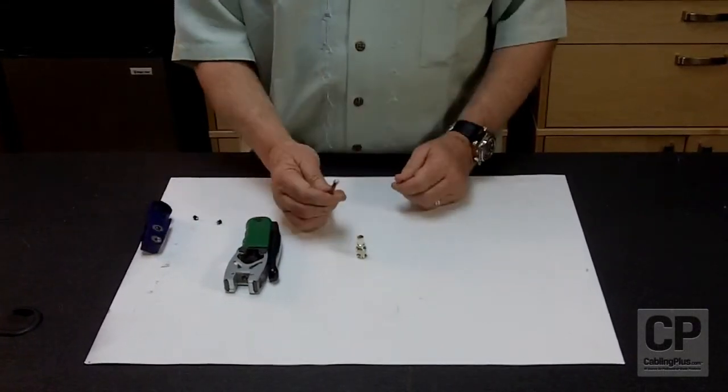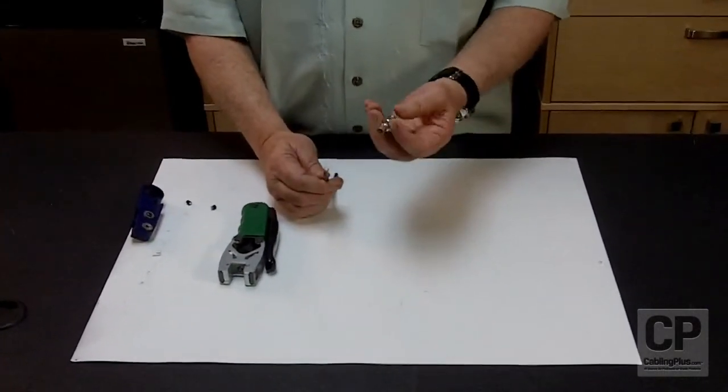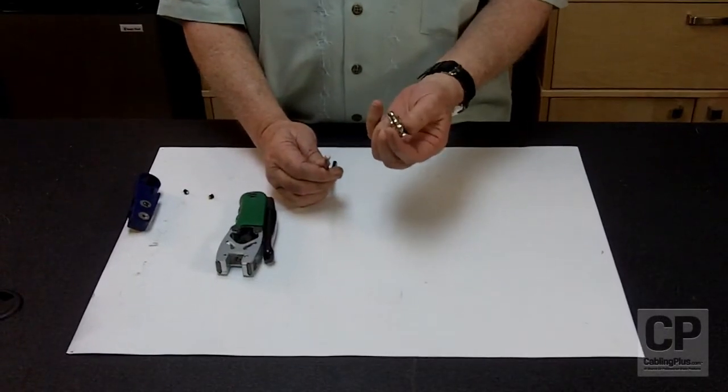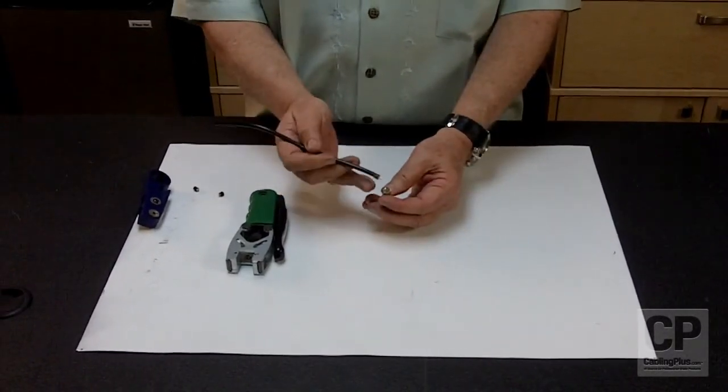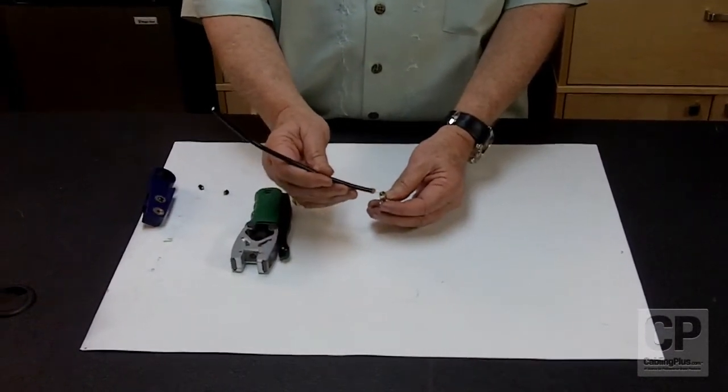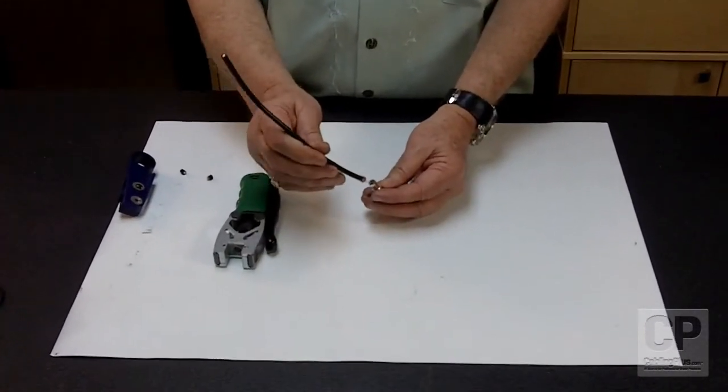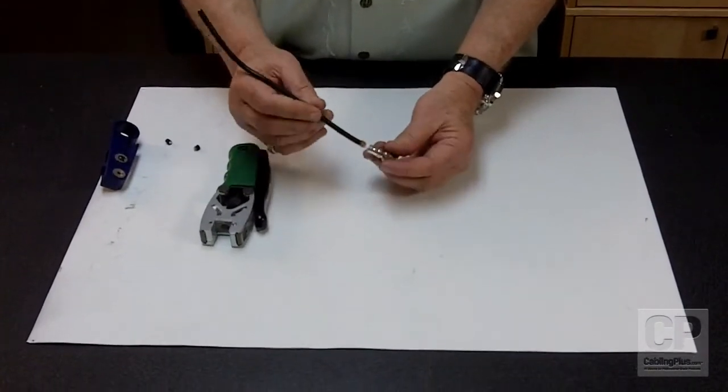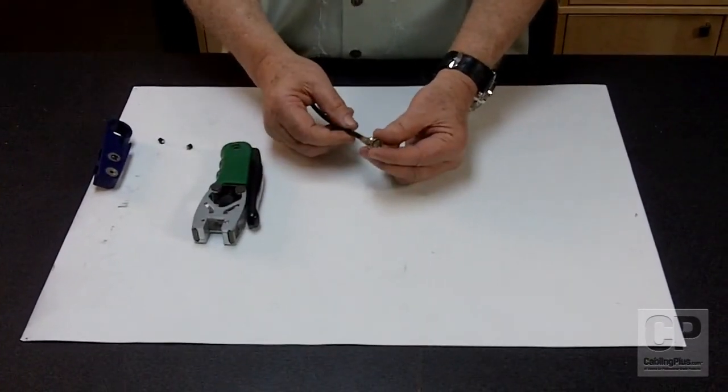Once you have the cable prepared, the nice thing about the DB59 BNC connector is that it doesn't have a blind entry. It has a little collet that's right there, and it makes it real easy to put the pin or the center conductor of your cable right into that collet. That way you know that the cable is installed correctly.